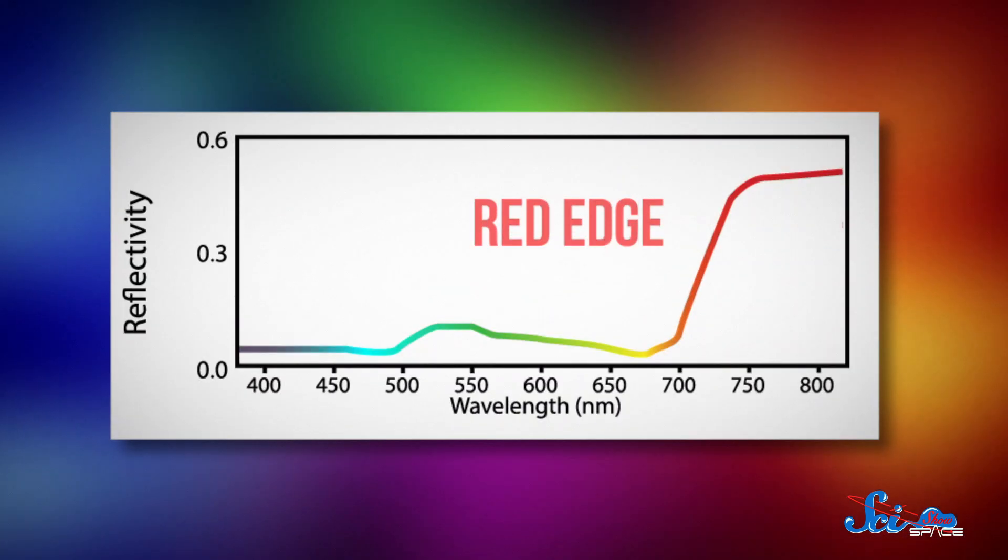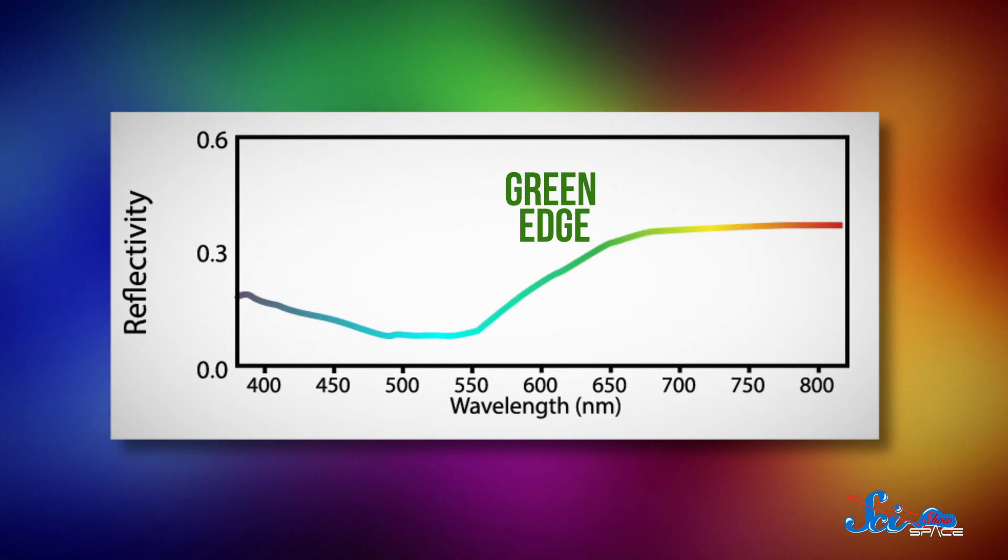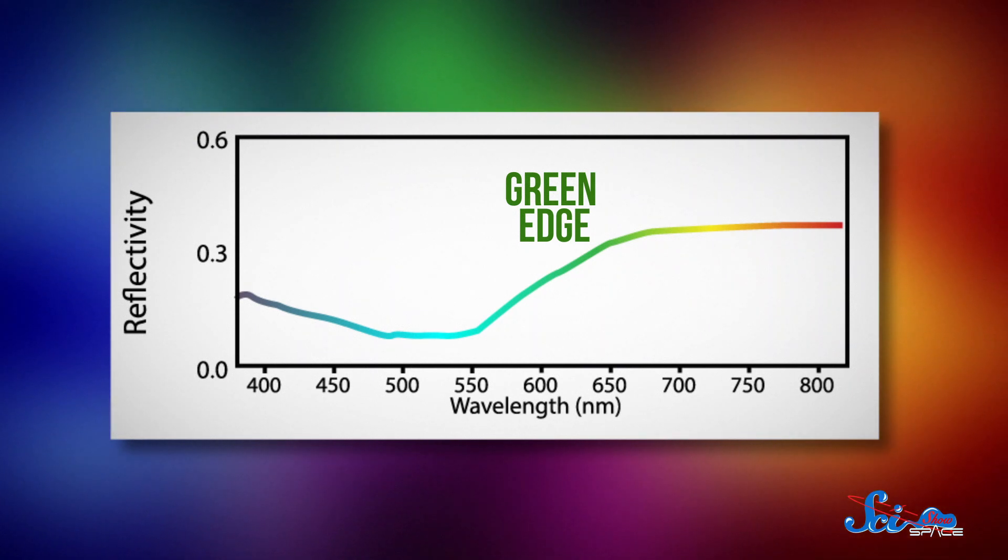But purple life would look different. Instead of a red edge, it would create a green edge, a sudden change in how much light it's reflecting as light transitions from red, which retinol reflects, to green, which retinol absorbs.